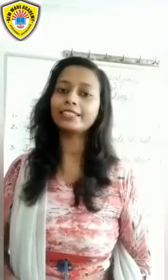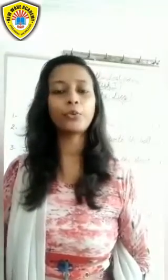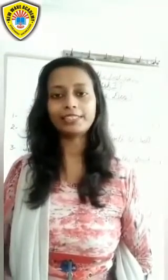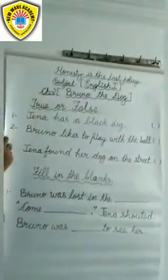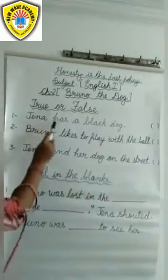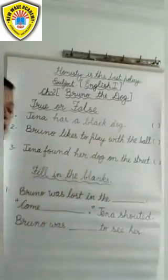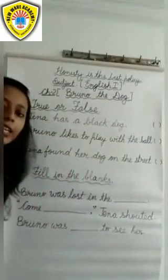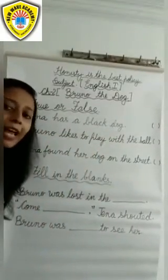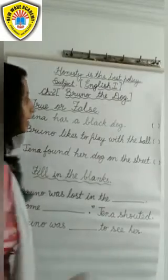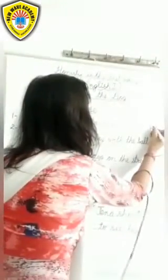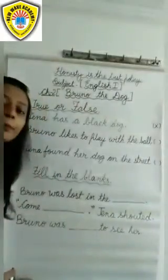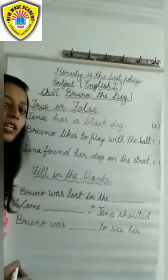Now let us revise true and false. First: Jenna has a black dog. Jenna ke paas black dog hai. This is false. Jenna ke paas brown dog hai.